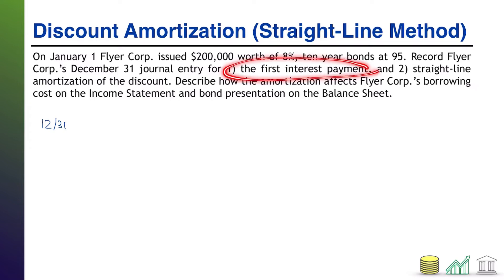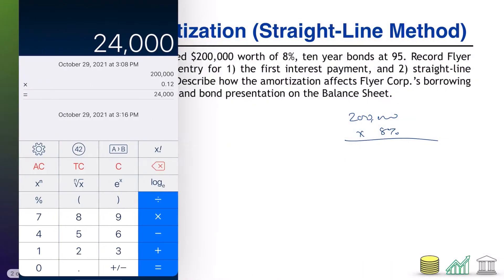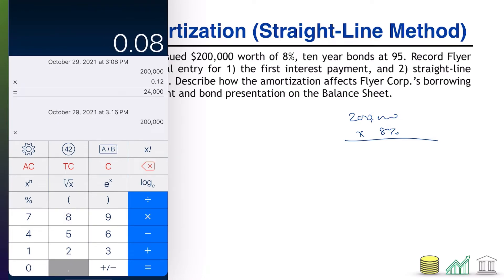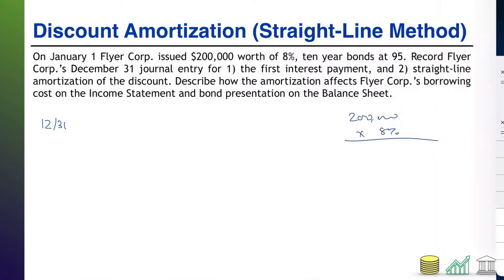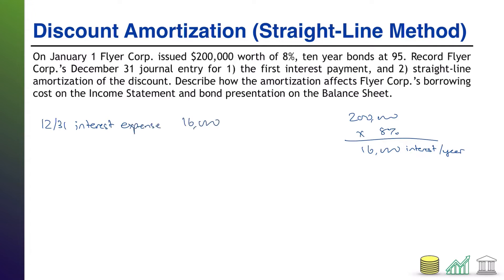First thing I'm going to deal with is the interest — what I have labeled here as number one. We have a $200,000 bond that is paying 8% interest. So we're going to have $200,000 times 8%. $200,000 times 0.08 works out to $16,000 in interest per year. This is an annual journal entry. We started on January 1st, it's now December 31st, so we have incurred interest expense of $16,000 for the year that has just gone by, and it says we are making the first payment.